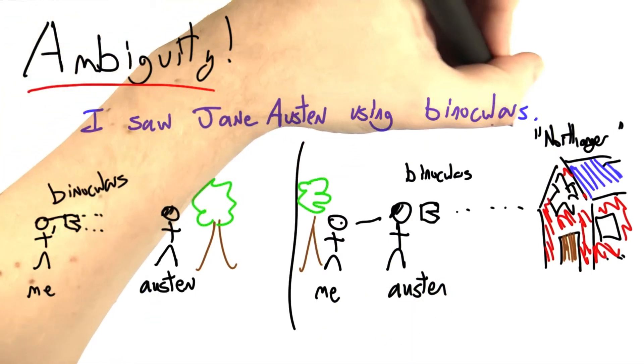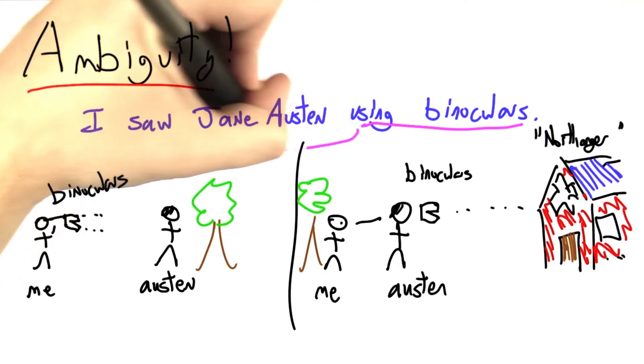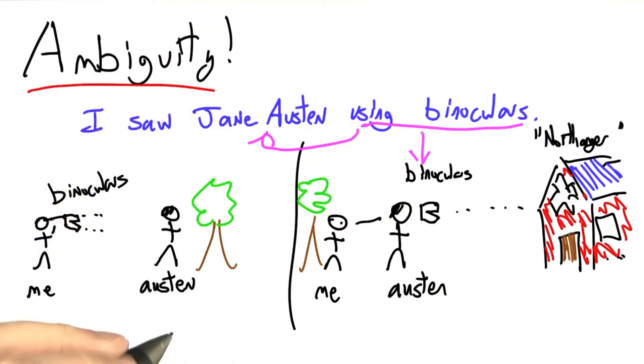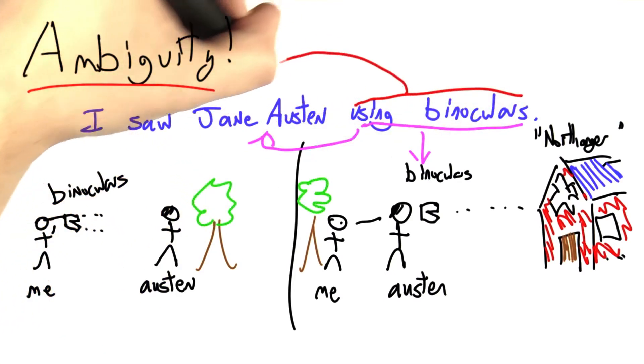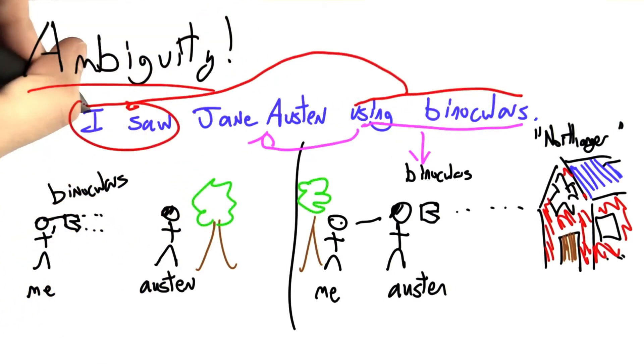It's not clear whether using binoculars modifies Jane Austen. Is she the person using binoculars? Or whether using binoculars modifies I saw, the picture on the left. That's how I'm seeing.